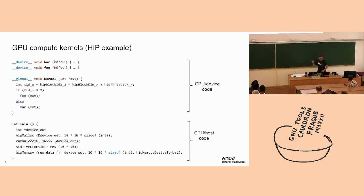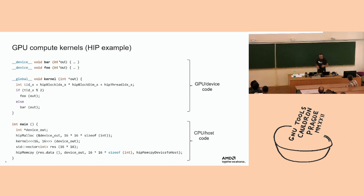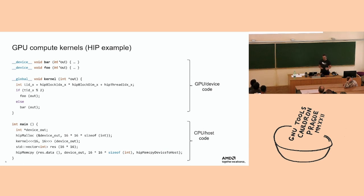Each invocation of the kernel is able to know which item it's working on using HIP variable intrinsics: hipBlockIdx, blockDim, and threadIdx. The terminology can be confusing — work groups and blocks refer to the same thing, and work items and thread index are equivalent. Depending on which project you're working with, there can be multiple terms used for the same concept.